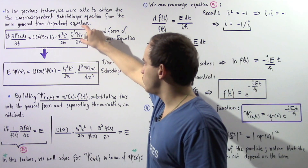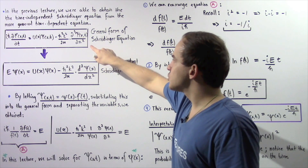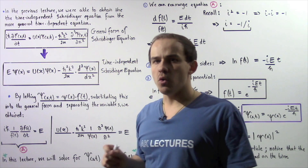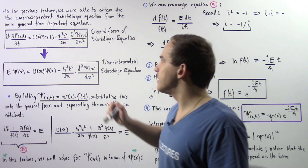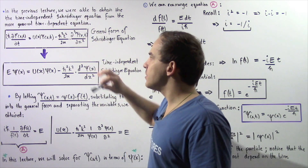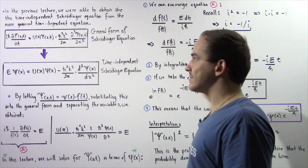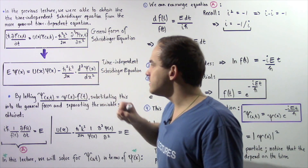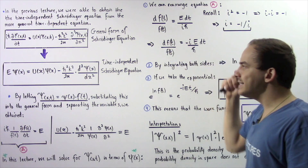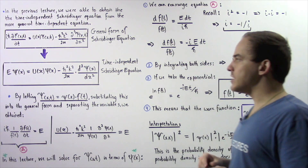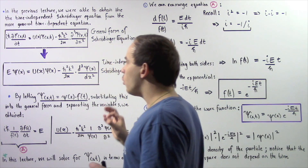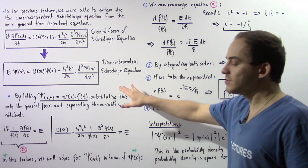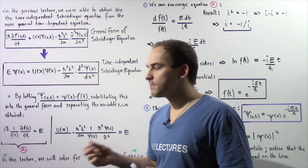What exactly is the difference between these two equations? In the time-dependent equation, our wave function, also known as the total wave function, depends not only on the position x along the x-axis, but also on time. Whereas in the time-independent Schrödinger equation, our wave function only depends on x and does not depend on time — the time is fixed.